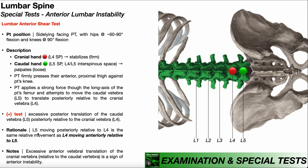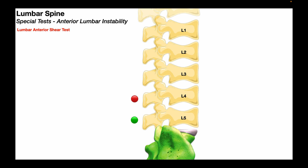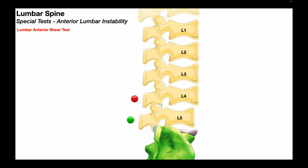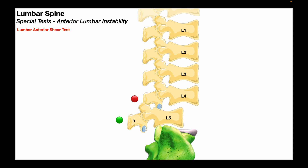Due to the fact that there's nothing to grab onto, we have no way of directly pulling L4 anteriorly. However, L5 moving posteriorly relative to L4 is the same relative movement as L4 moving anteriorly relative to L5. Here is an exaggerated view of what you'd actually be feeling in a positive anterior shear test — stabilizing L4 firmly and loosely palpating L5 to feel for that excessive movement of L5 posteriorly relative to L4.